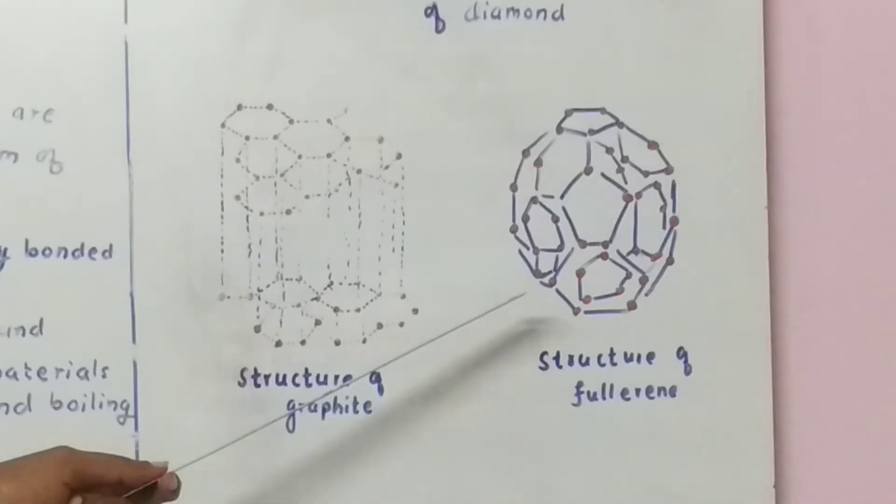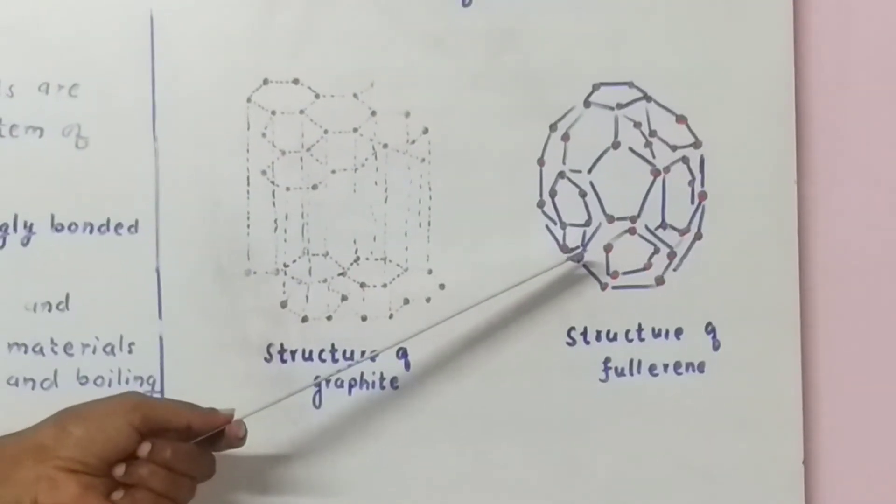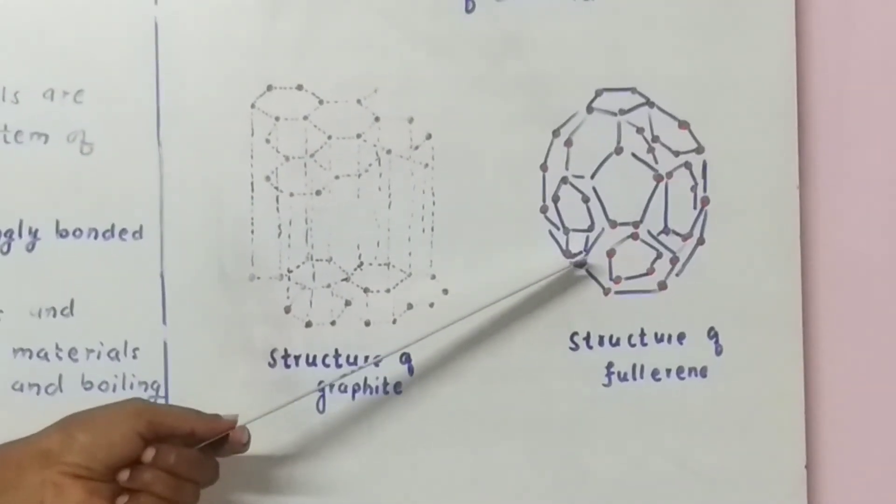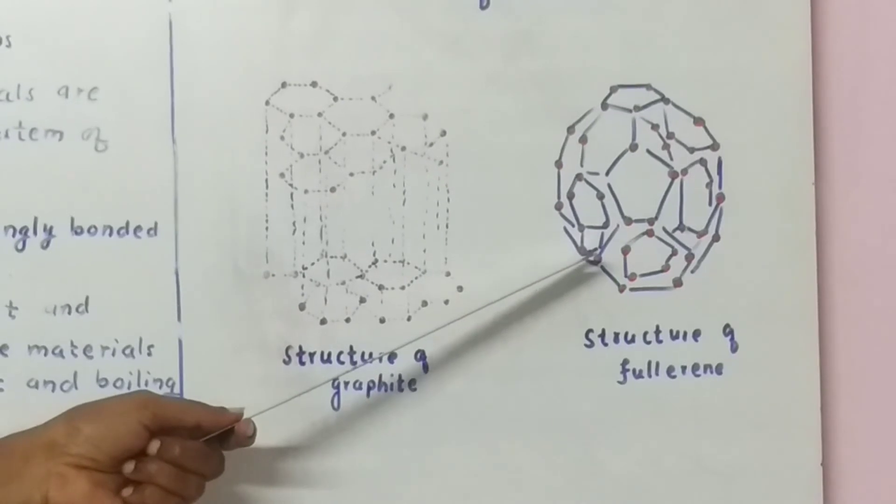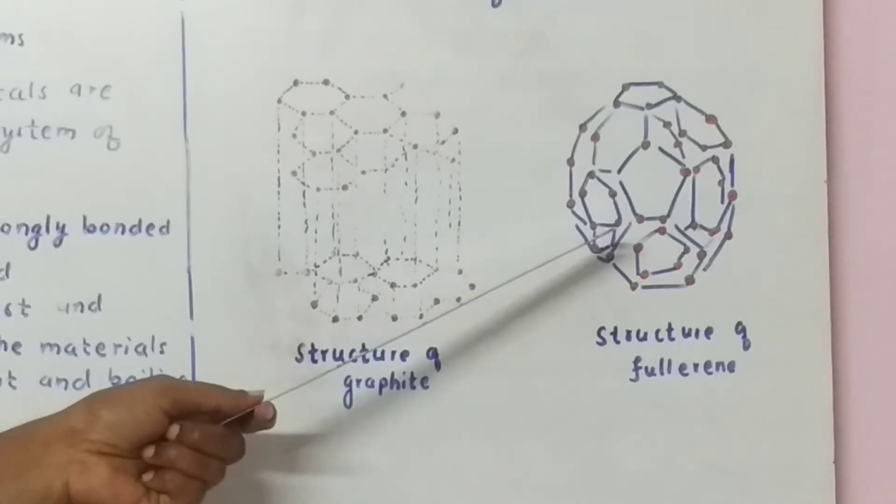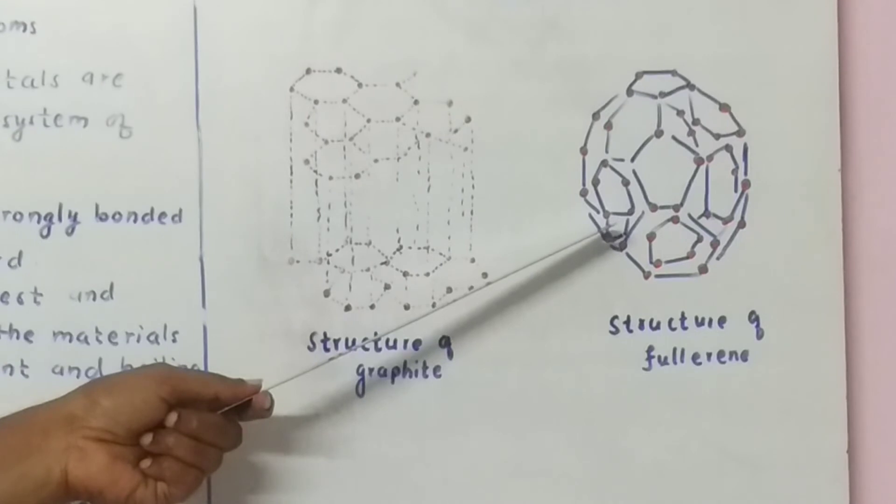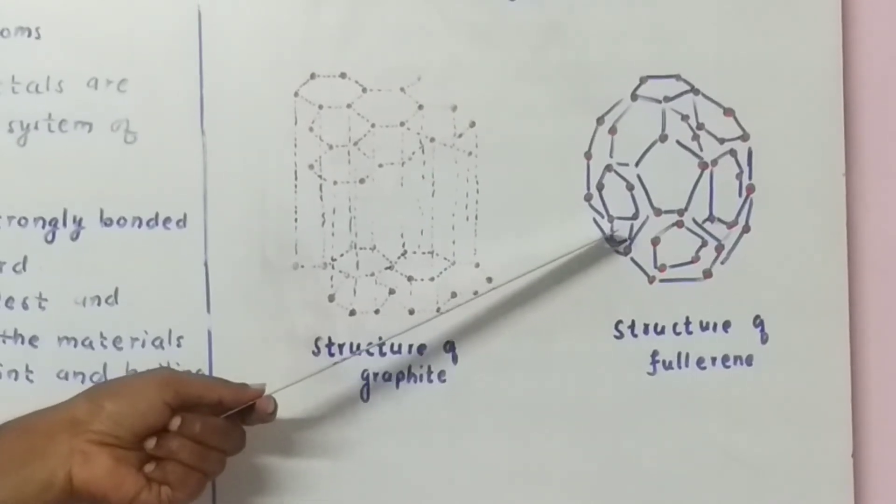It is obtained by irradiating carbon to high power waves and electric spark between the graphite electrodes produces fullerene.